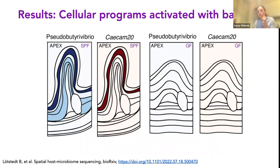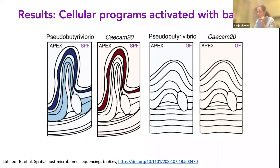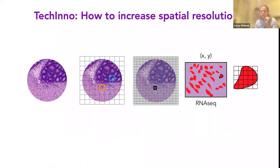In the SPF mouse, for example, in the presence of Pseudobacteroides vibrio, we see expression of CXCHEM genes — CXCHEM2, CXCHEM1, and so on. These are genes that lie in the mucus of the bacteria, on the border of the apex and the pellet in the colon cross section.